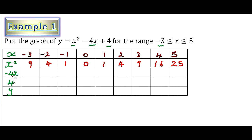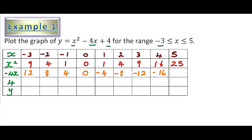For the -4x row, we multiply -4 by each value of x: -4 × -3 = 12, -4 × -2 = 8, -4 × -1 = 4, -4 × 0 = 0, -4 × 1 = -4, -4 × 2 = -8, -4 × 3 = -12, -4 × 4 = -16, and -4 × 5 = -20.